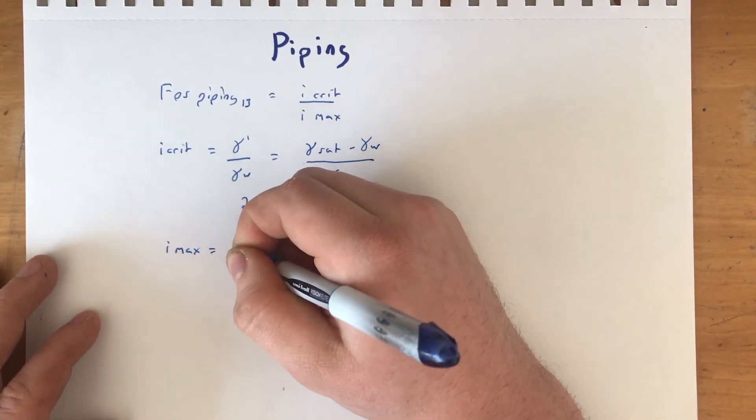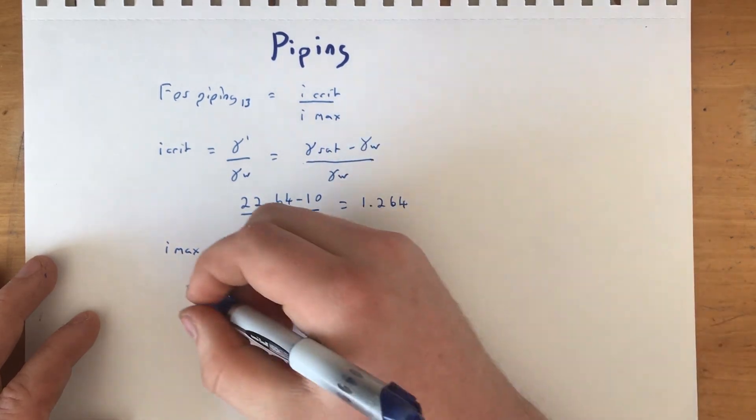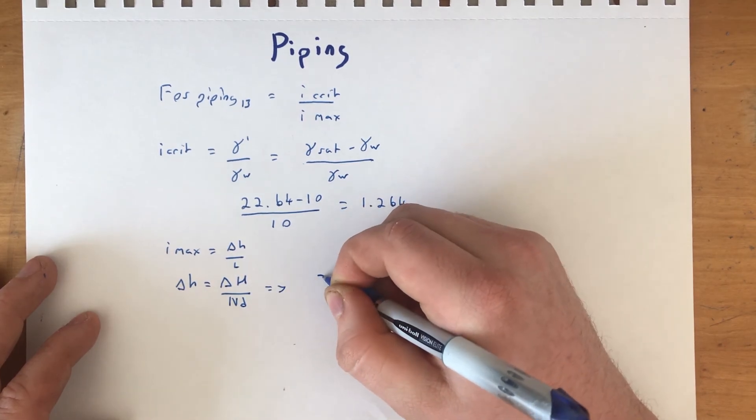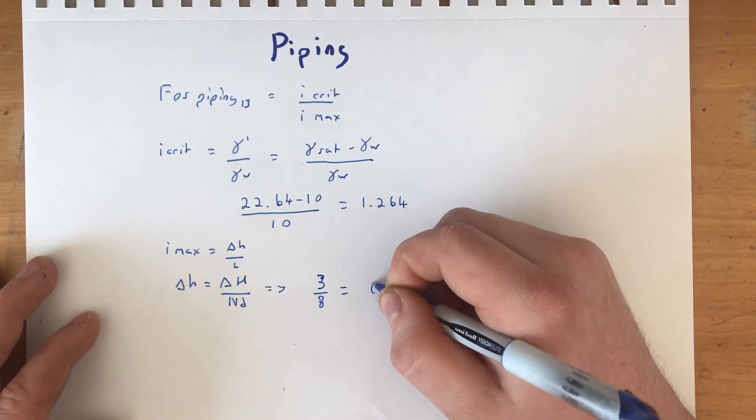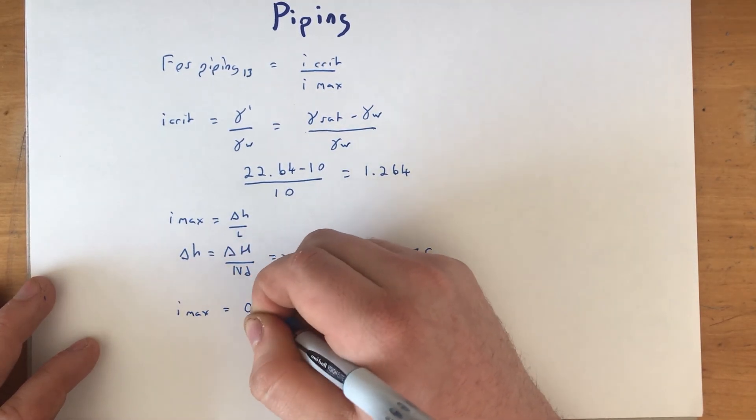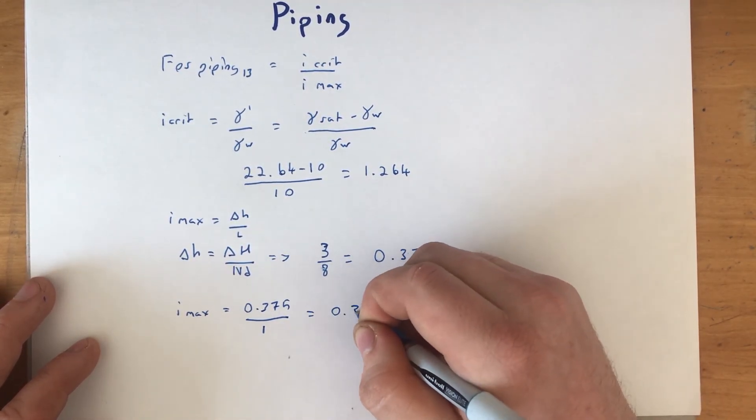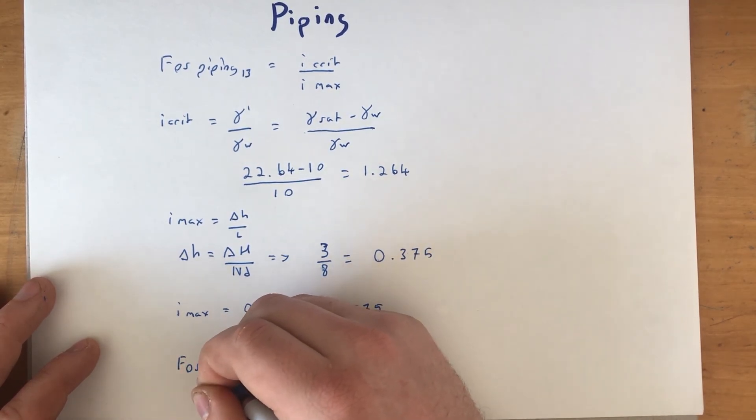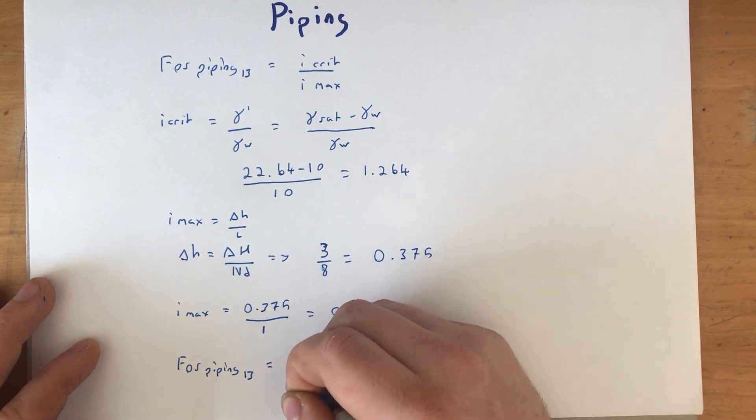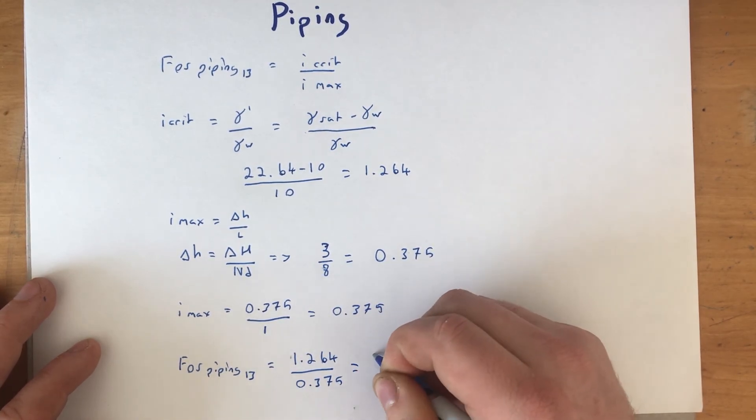The maximum hydraulic gradient is found in the smallest square in the flow net, usually found near the exit of the dam. It is found by dividing the drop in head across the square by the height of the square. The factor of safety of piping due to boiling in our dam is 3.37. The factor of safety should be at least 3 in earthen dams.